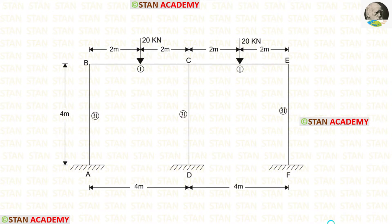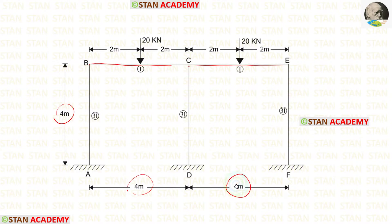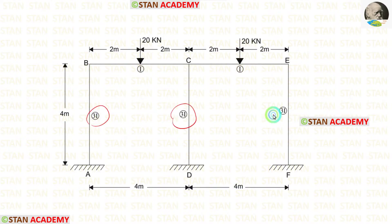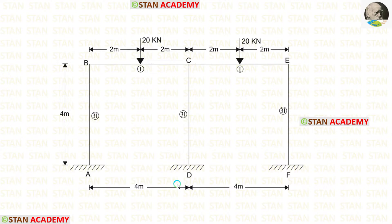This is a 1-storey and 2-bay frame. The length of the columns is 4 meters. The lengths of spans BC and CE are also 4 meters. The moment of inertia for the columns is 3I, and for the beams it is I. There are no loads in the columns. In the spans BC and CE, there are point loads of 20 kN acting at the center.